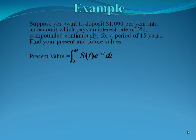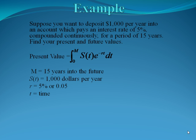Remember, present value is the integral from 0 to m, S of t, e to the negative rt dt. Here my m is 15 years, that's how long I'll invest my money for. S of t is my income stream per year, here it's $1,000 per year, so S of t is $1,000. My rate is 5%, or as a decimal, .05, and t is time. T is our variable here, so we don't plug anything in for it.